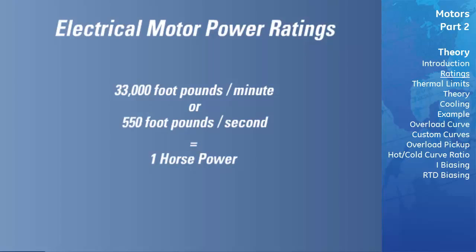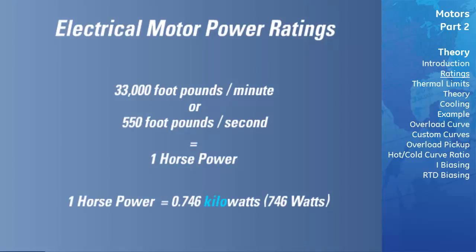Horsepower has remained as a standard unit of power rating for electrical motors in North America, while in Europe the kilowatt has become the standard. One horsepower is equal to 746 watts, or 0.746 kilowatts. To convert a motor's kilowatt rating to horsepower, one can simply multiply the kilowatt rating by 1.341.